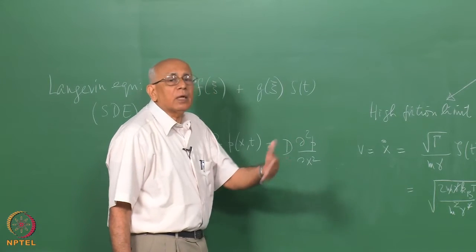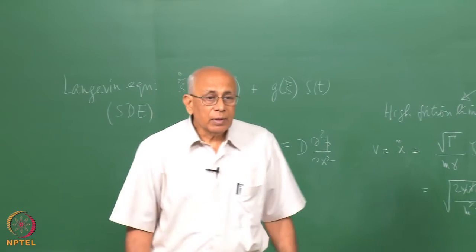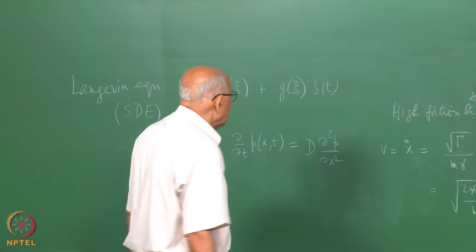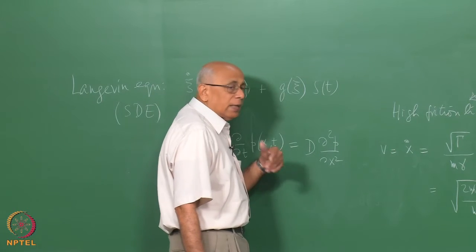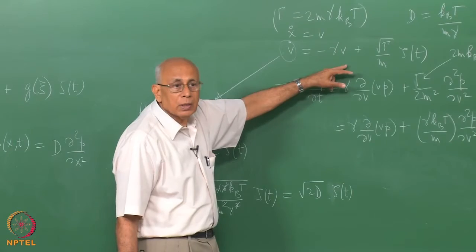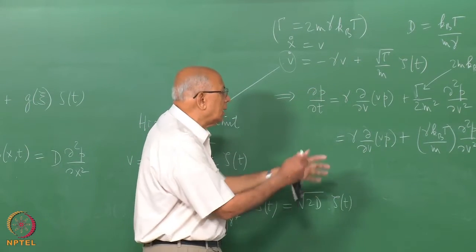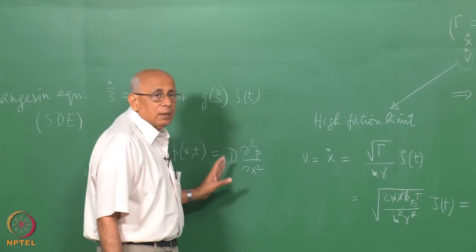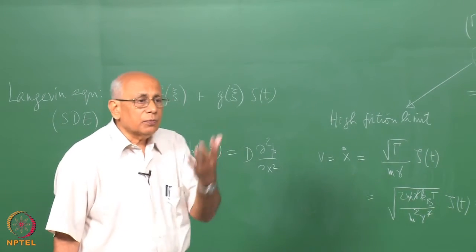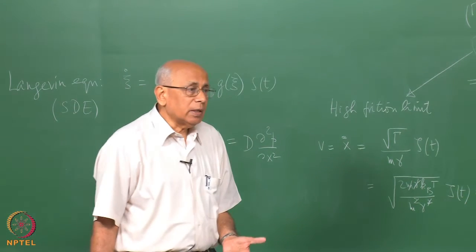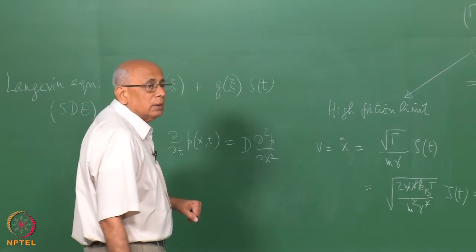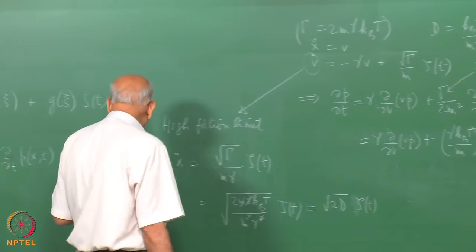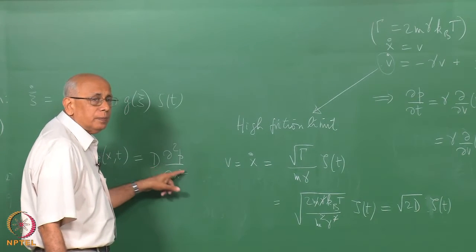There is no drift term in this diffusion equation. It would be present if I included an external force — for example, diffusion in a potential or under gravity. If I looked at sedimentation — diffusion of a molecule in a vertical column under gravity — there would be a constant force, leading to a first-order term plus a second-order term on the right-hand side. That would change the solution considerably.